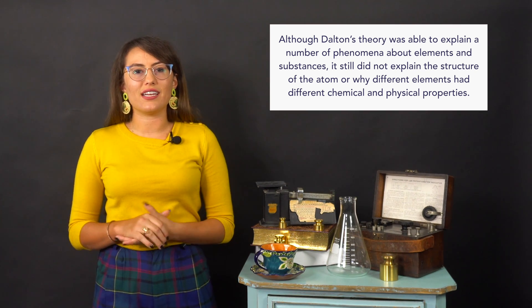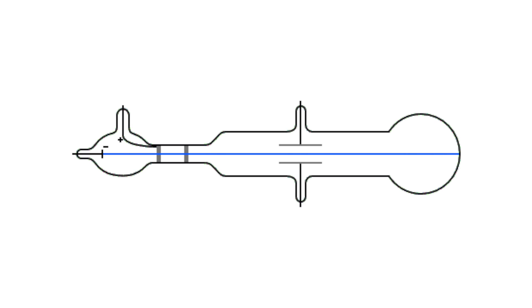Our modern understanding of the atom is mostly based on several key experiments. Some of the first experiments to give us clues as to the structure of the atoms came from cathode ray tubes. These tubes consisted of a glass tube with two oppositely charged plates and were under vacuum.